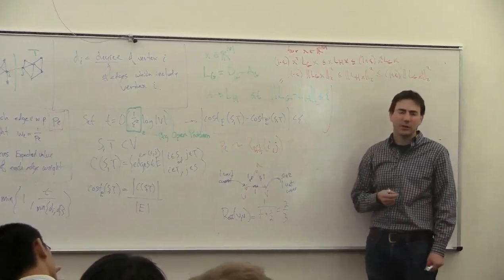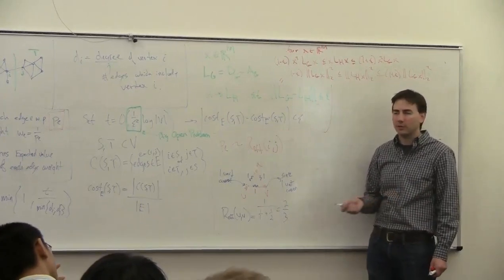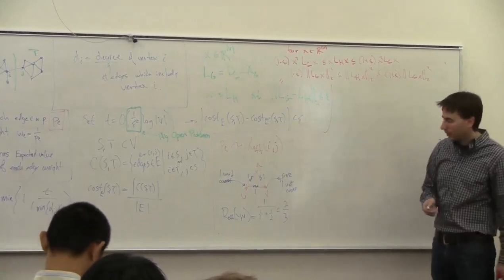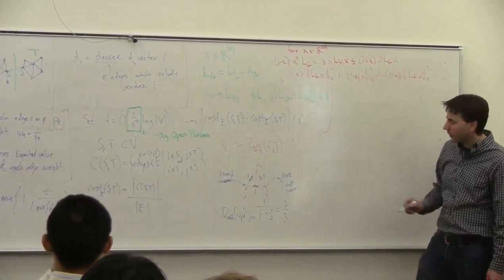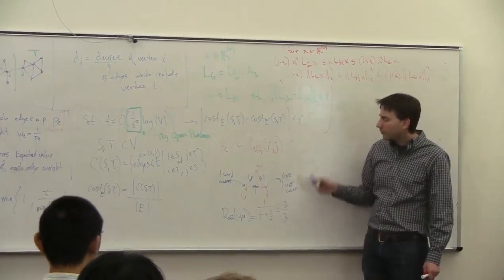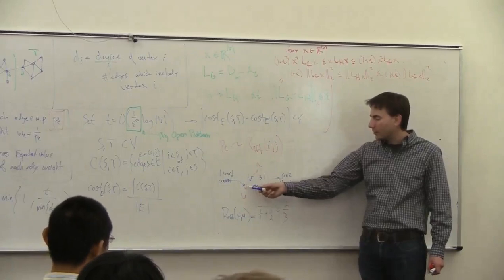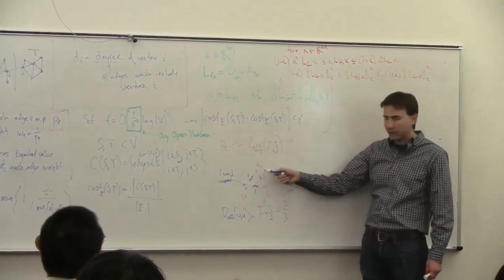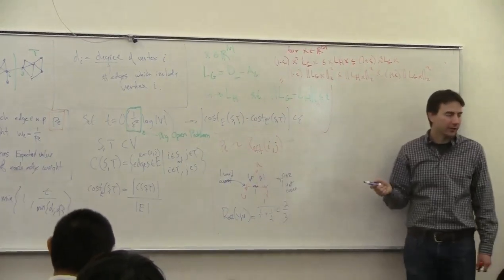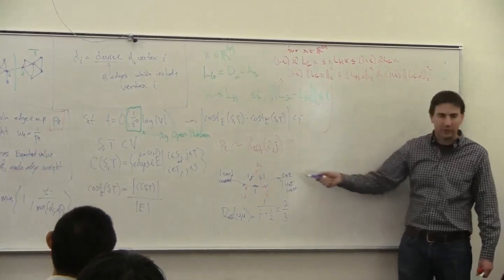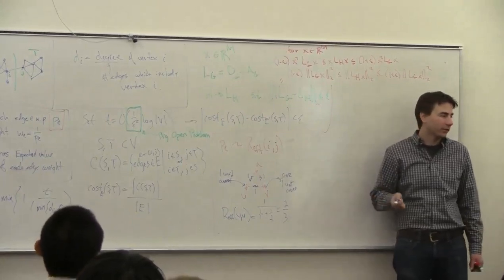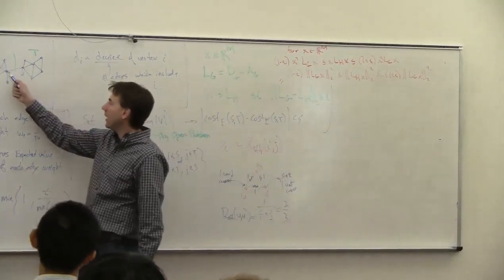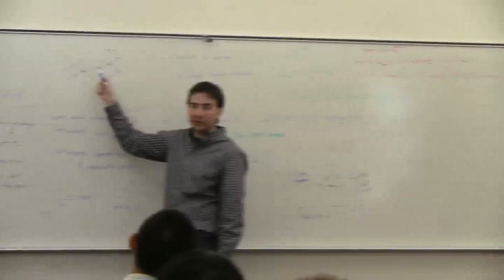There's actually a way to solve for the PageRank factor using effective resistance. In this simple graph, by symmetry, all edges have the same effective resistance — two-thirds. But in a more complicated graph, a bridge edge would have an effective resistance of one, which is as large as it could be. So you want to sample that edge with a very high probability, ideally with probability one.